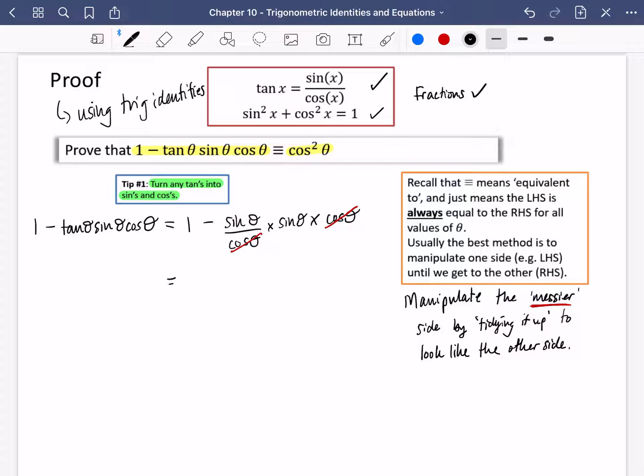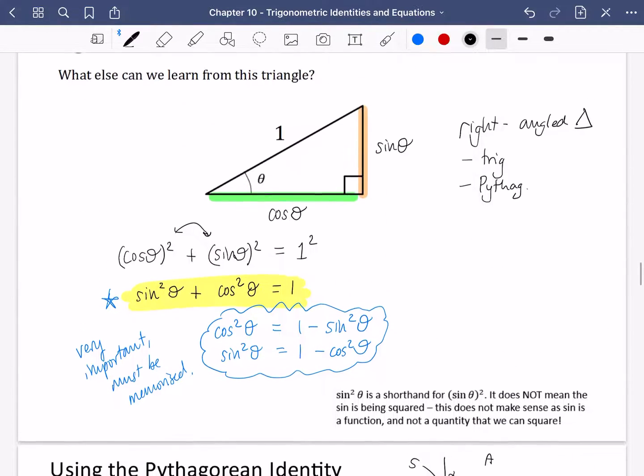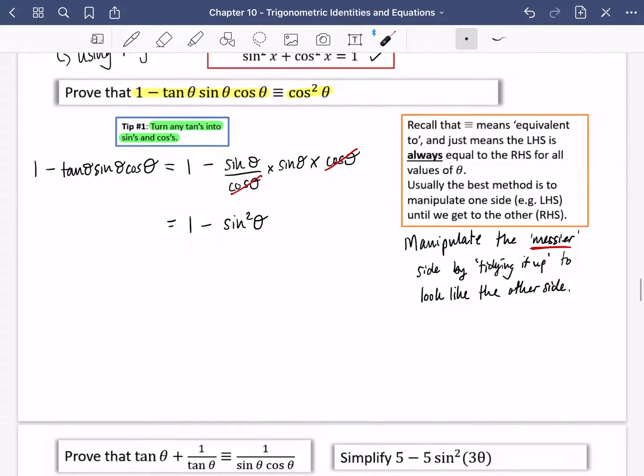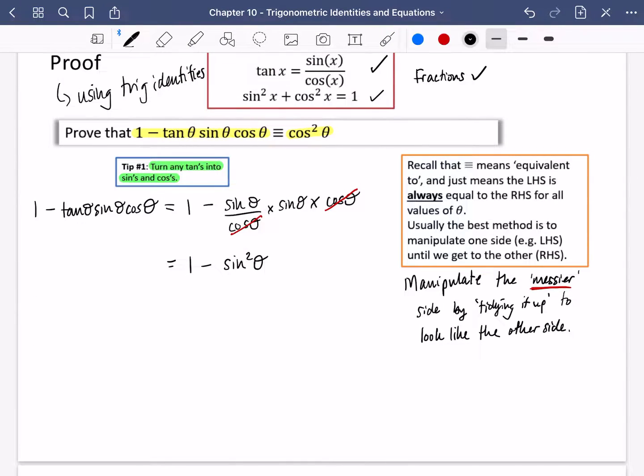And this leaves us with 1 minus sin θ multiplied by sin θ, and sin θ multiplied by sin θ is 1 minus sin squared θ. Now I asked you to memorize this one. 1 minus sin squared θ is here, and it is exactly the same as cos squared θ. You don't need to do any rearranging. The examiners will just presume that you know this. 1 minus sin squared θ is the same as cos squared θ. So it's done.